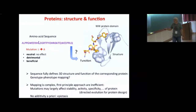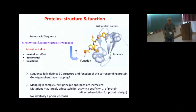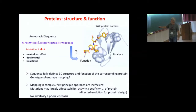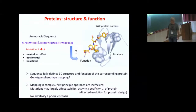First-principle approaches, which try to build models that predict function from sequence, are very complicated. People have devoted a huge effort to this, and successes in the physics community are limited. Some nice things have been done, but it's not totally clear how to go further for bigger proteins. So many people are trying to use other approaches to solve this genotype-phenotype mapping problem.